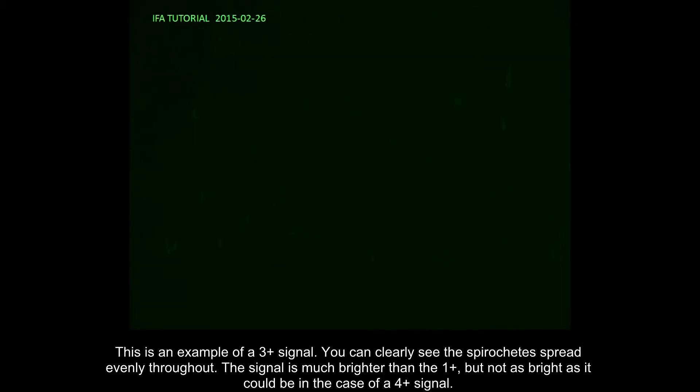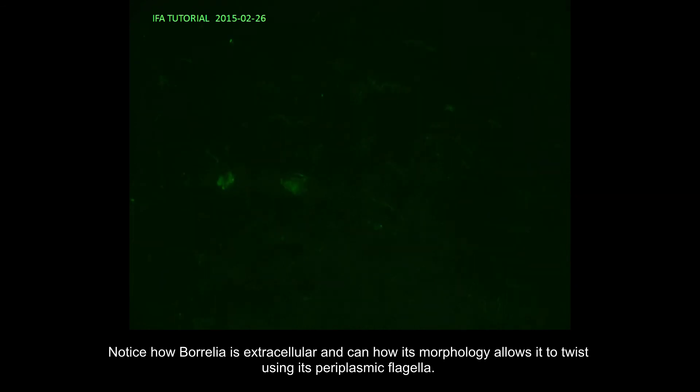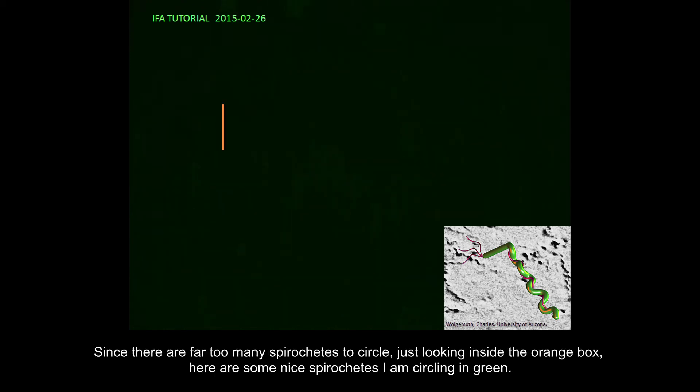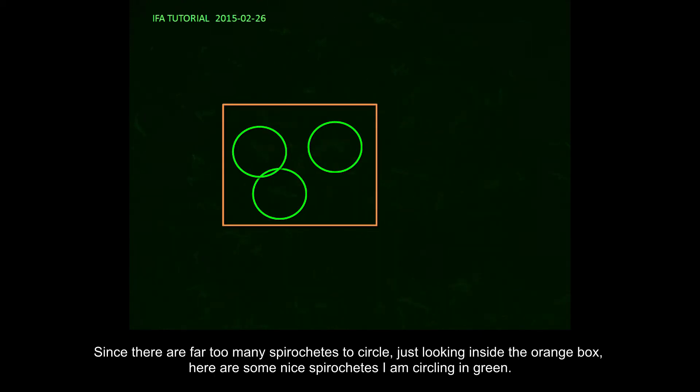This is an example of a 3-plus signal. You can clearly see the spirochetes spread evenly throughout. The signal is much brighter than the 1-plus, but not as bright as it could be in the case of a 4-plus signal. Notice how Borrelia is extracellular and how its morphology allows it to twist using its periplasmic flagella. Since there are far too many spirochetes to circle, just looking inside this orange box, here are some nice spirochetes I am circling in green.